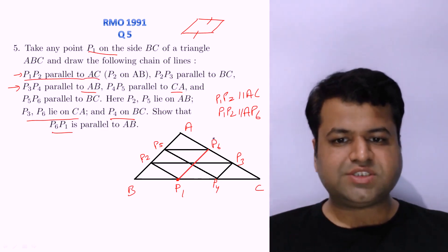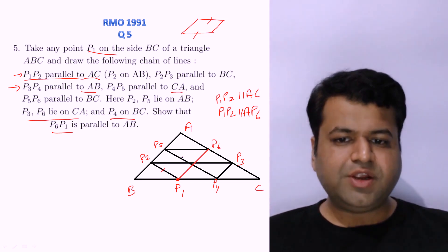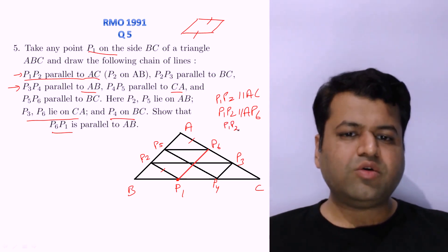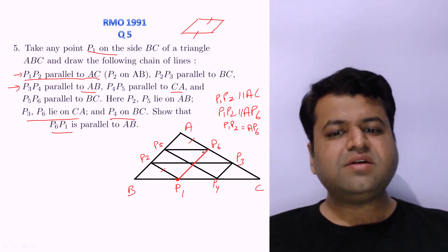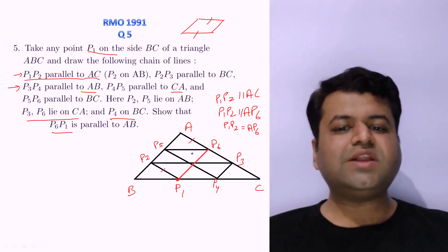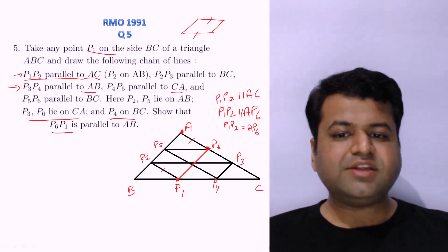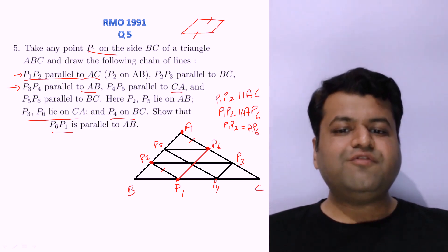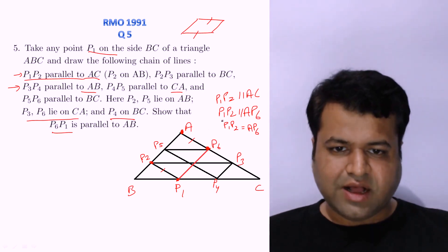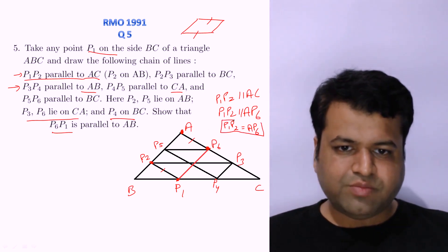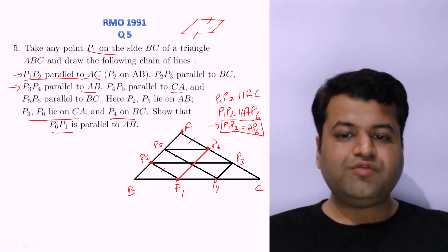As mentioned in the question, P1P2 is parallel to AC. So we just need to prove that P1P2 is also equal to AP6. If we can prove that P1P2 equals AP6, then since they are also parallel, the quadrilateral AP6P1P2 will be a parallelogram, which will imply P1P6 is parallel to AP. So our question now becomes: we need to prove P1P2 equals AP6.